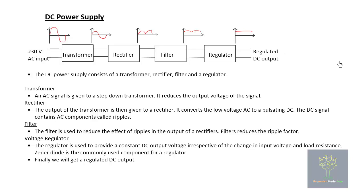The available voltage in our homes is a 230 volt AC input, and in order to use this power supply in our electronic devices we need to convert this into a DC voltage. For that we are using a DC power supply, which consists of a transformer, a rectifier, a filter, and a regulator.